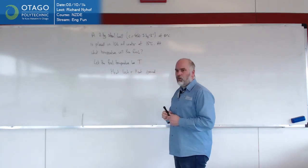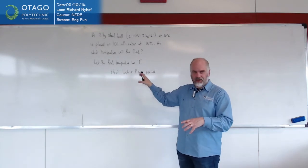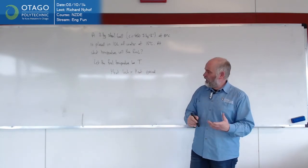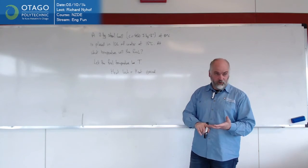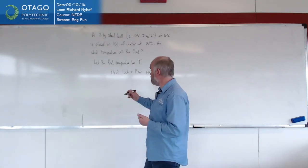So whatever heat the steel is losing, the water is gaining. And that's the physics. That's the big idea. And then it's a matter of using our formulas. So our formula tells us Q is what we're looking for, is MC delta T.